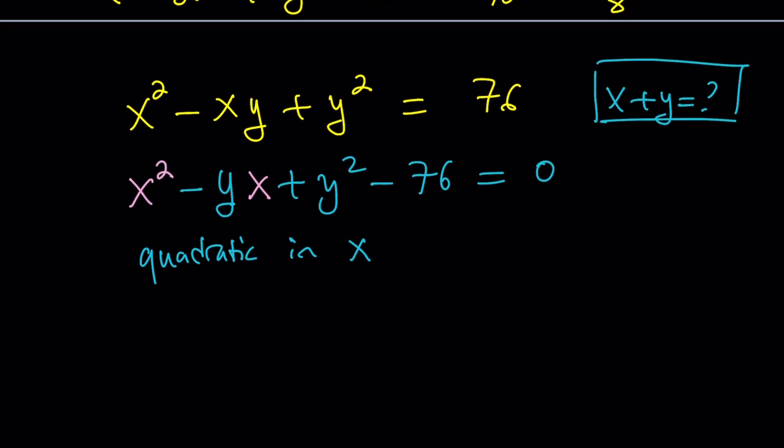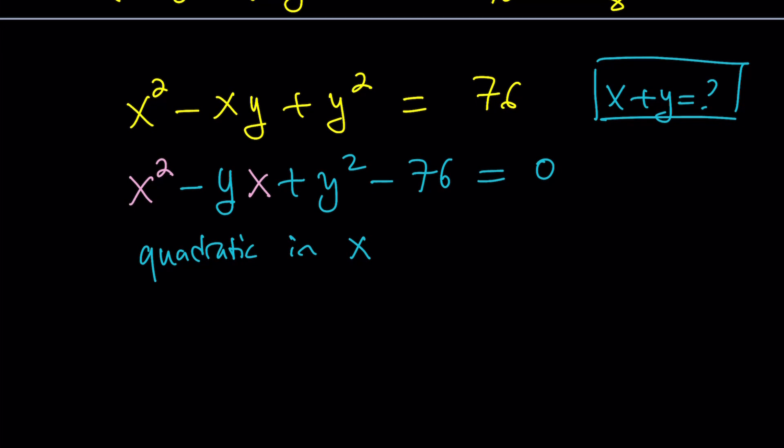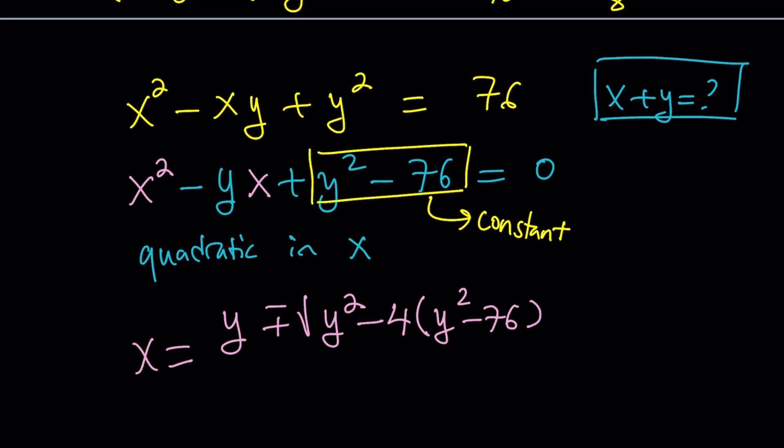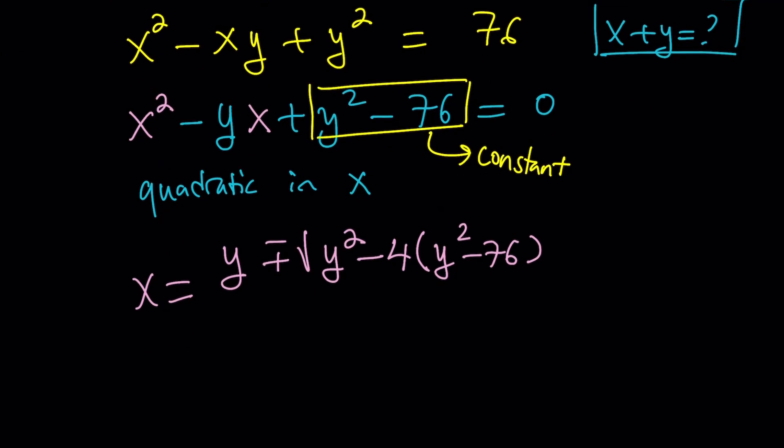Cool. Now, once we write this as a quadratic in x or we make it clear, we can go ahead and use the quadratic formula, right? The quadratic formula says that x can be written as negative b, which is y, plus minus the square root of b squared, which is y squared, minus 4ac, a is 1, so it's just going to be c, and that is y squared minus 76. Notice that because this is quadratic in x, this will be a constant. Make sense? Because it's not in terms of x. Anything that is not in terms of x is considered a constant.